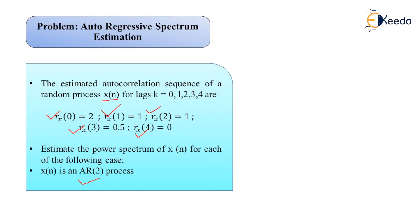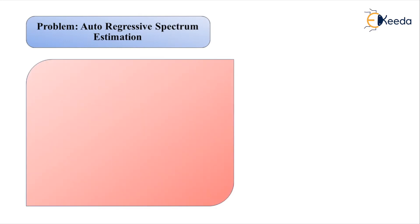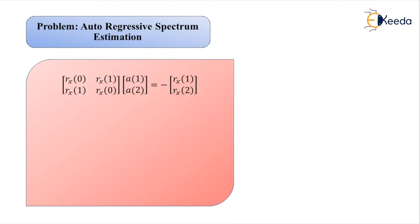As seen in the previous video, the power spectrum estimate for an AR process is represented as P̂_AR(e^jω). For a second-order AR(2) model, we determine the coefficients by solving the normal equations using the autocorrelation sequence matrix.